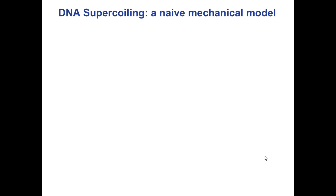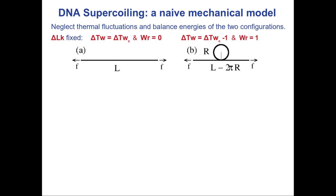Now we study the supercoiling of DNA — the transition into this plectonemic phase — using a very simple, naive mechanical model that neglects any thermal fluctuations. I'm considering a straight piece of DNA of length L where a force is applied at the two ends. If I neglect fluctuations, the length remains L and nothing changes from the force alone.